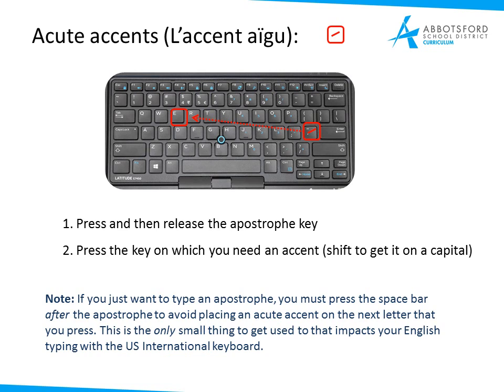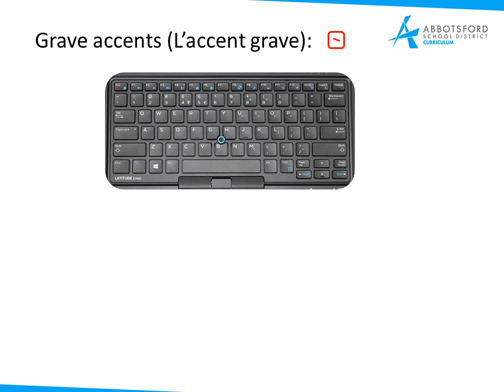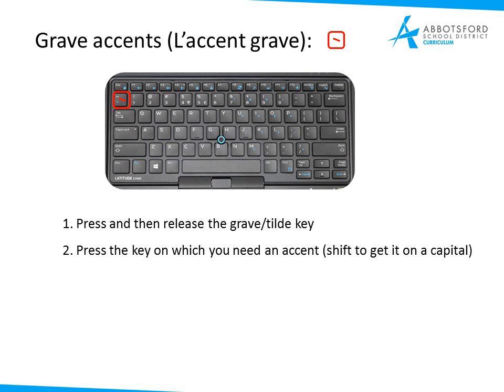That's really the only small thing you need to get used to with the US International keyboard, and you'll find that if you're writing in English it usually figures that out for you automatically anyway. For the grave accent, it's very much the same kind of thing. The grave accent key is in the top left-hand corner — press and release the grave or tilde key, which is just below your Escape key. Then select the letter you want to put that accent on, and if you want it capitalized, do Shift+E for example.